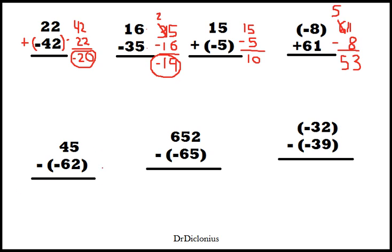Let's move down here. 45 minus a minus 62. Now when you see two negatives together, this actually makes a positive. Two negatives makes a positive.